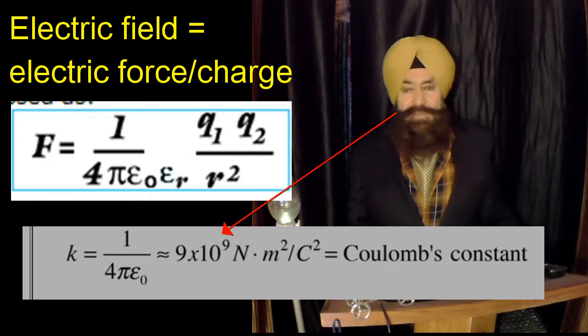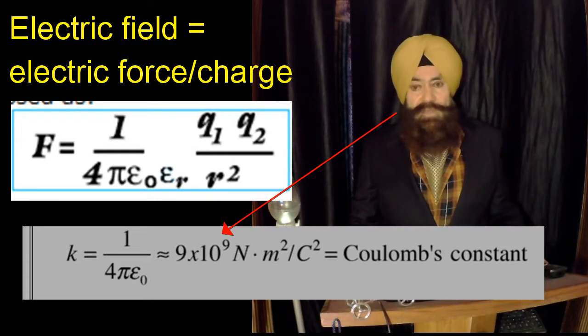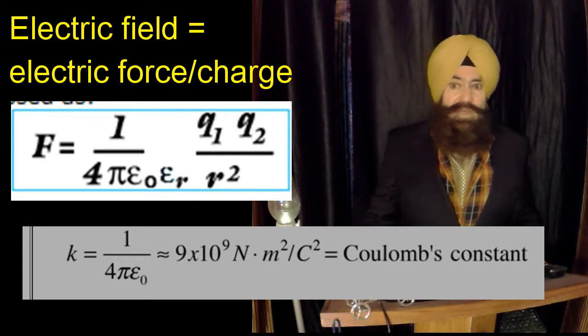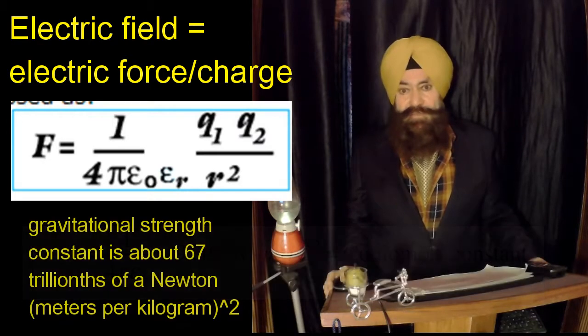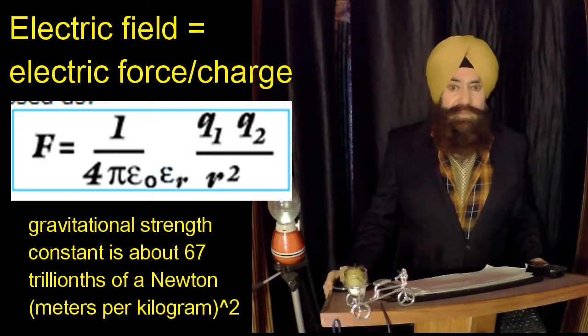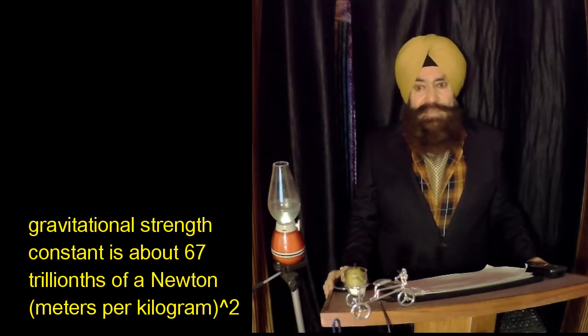By contrast, on the other hand, if you think about the gravitational force, there comes gravitational constant. And there the gravitational strength constant is about 67 trillions of a Newton meter square upon kilogram square. Thus, a given amount of electrical charges exerts a much larger electric force than a complementary amount of mass does gravitational force.